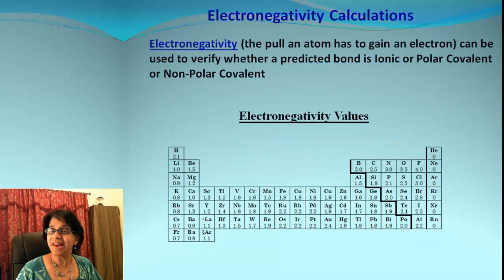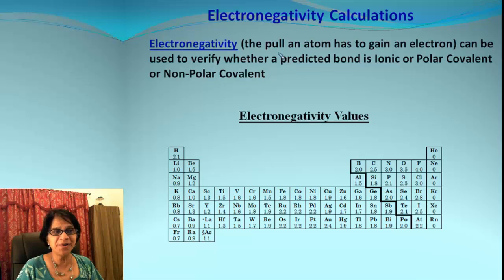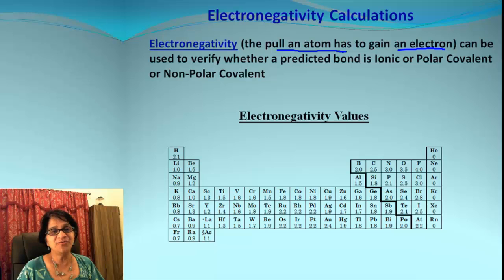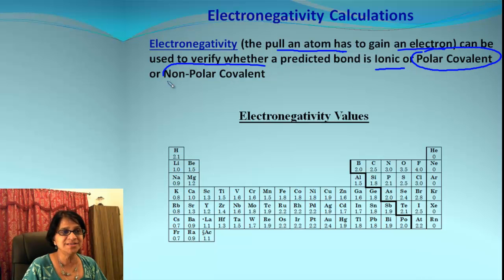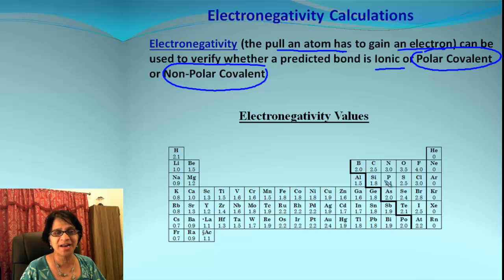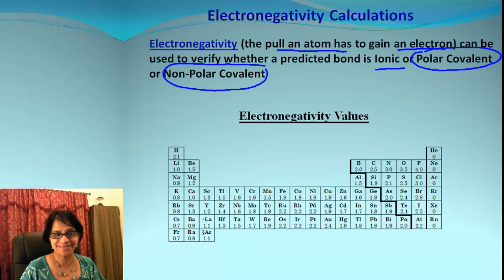So what exactly is electronegativity? It is the pull an atom can exert to gain an electron. With that, we can predict the type of bond — whether it is ionic, polar covalent, or non-polar covalent. The values for electronegativity are given in this chart.